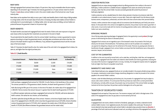Here's an example. Keith purchases a segregated fund contract for $100,000. His wife Patricia is the beneficiary of the contract. The contract provides a 75% guarantee at death, therefore the death benefit guarantee is $75,000. Keith dies during the fifth year of the contract. At the time of his death, the market value of the segregated fund is $80,000. Patricia receives that amount because it is greater than the death benefit guarantee of $75,000.